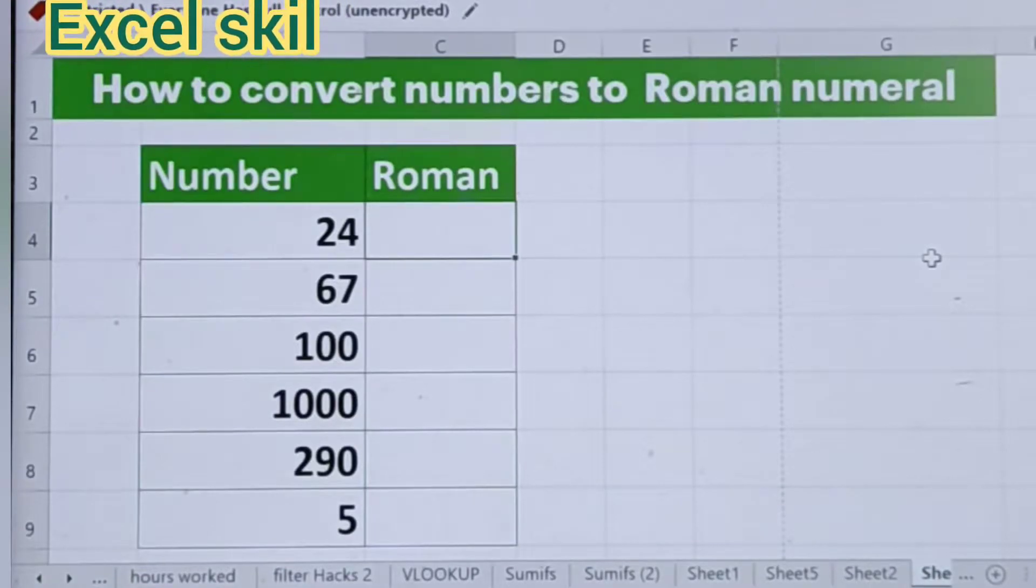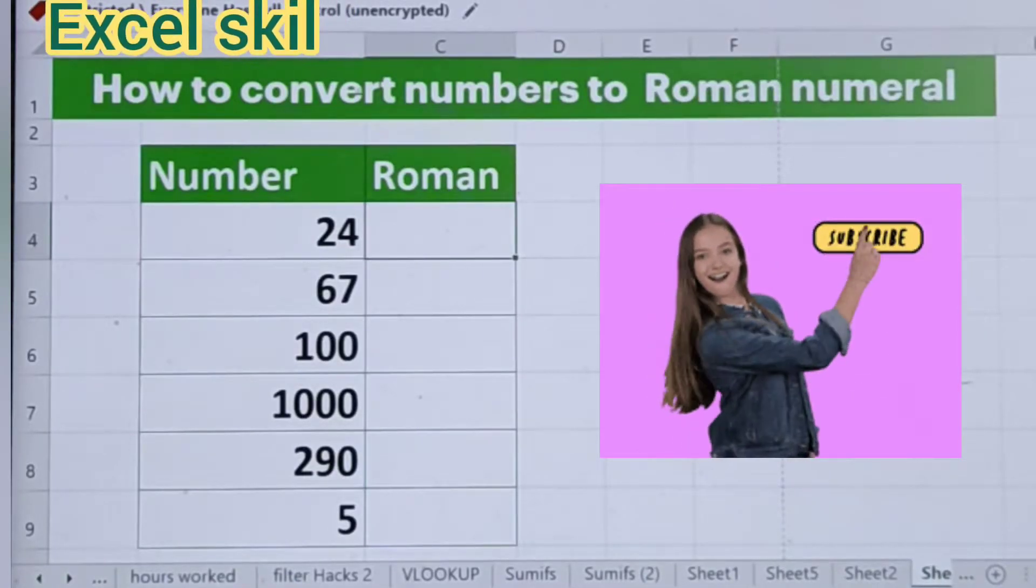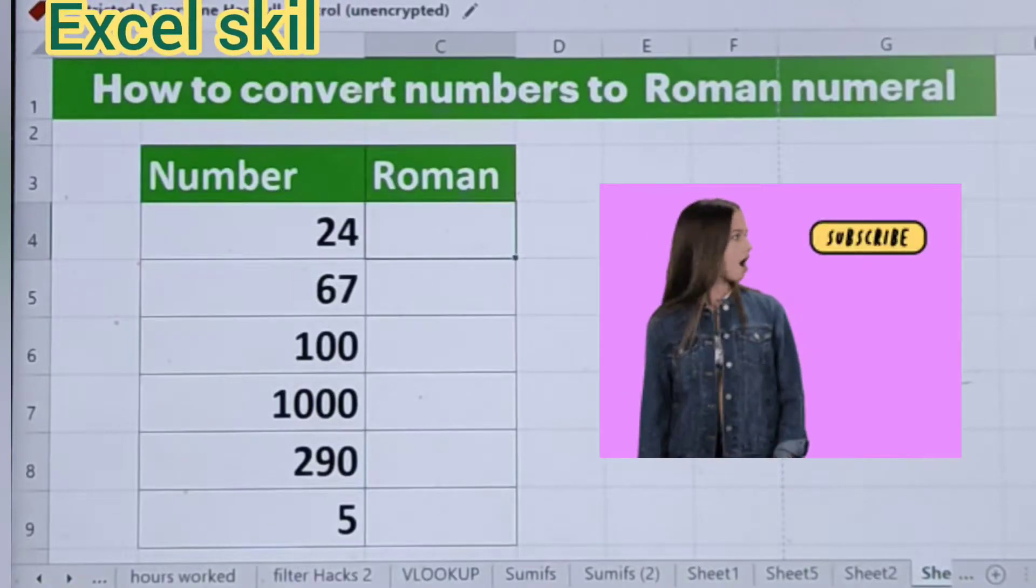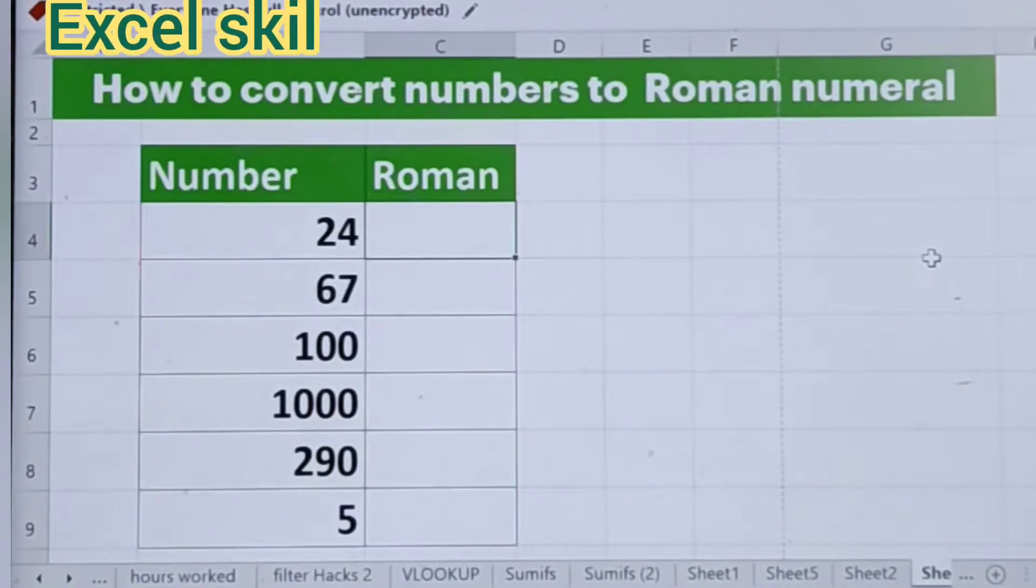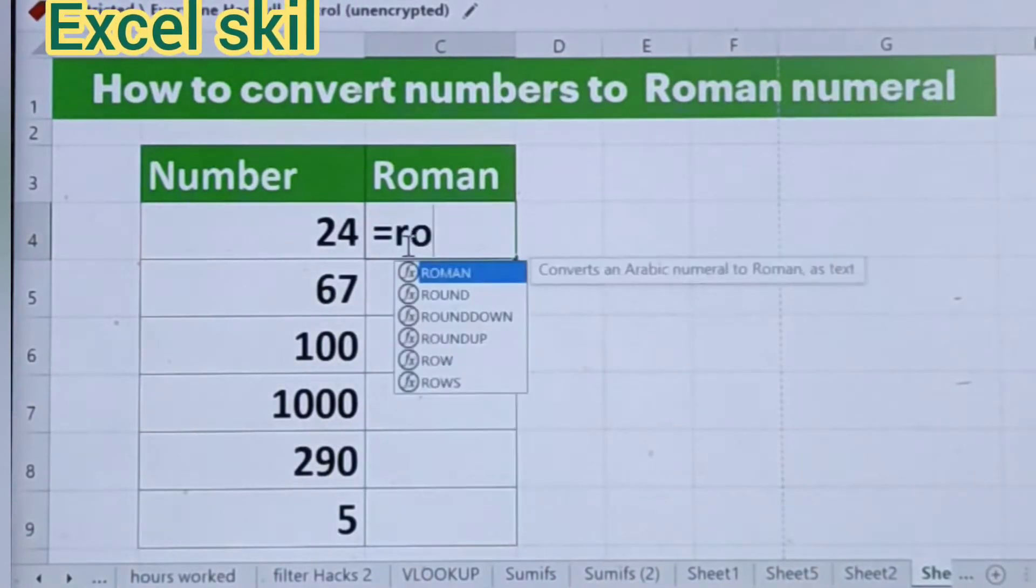M is 1000, and so on. So now we will learn how our data can be transferred to Roman numerals in our Excel sheet. Okay, for that let me start. Type equals ROMAN.